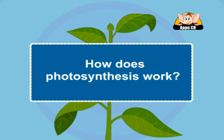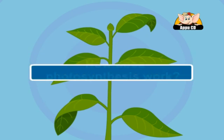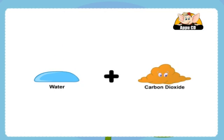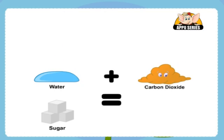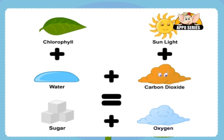So what exactly happens during photosynthesis? Water and carbon dioxide make sugar and oxygen in the presence of sunlight and green plant pigment which is chlorophyll.